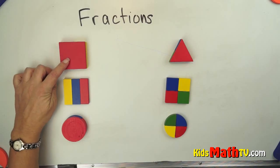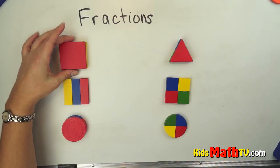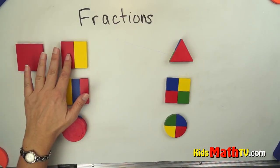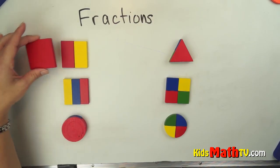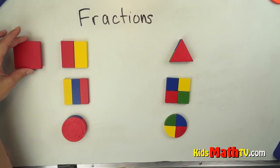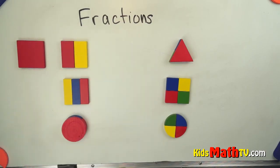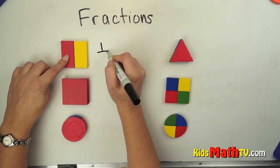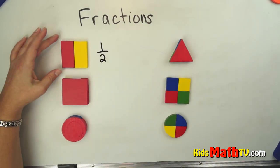If we have this whole square, we can split that whole square up into equal parts. In this case we have two equal parts. So it's the same square, same size, same shape, but it's into two parts. So if I have one out of two parts, we call that one half.